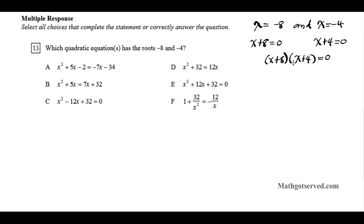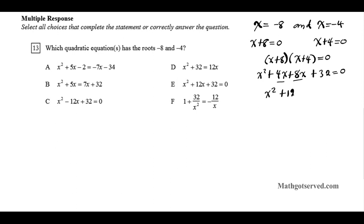We're doing the reverse process of solving a quadratic equation. Now we distribute using FOIL: x squared plus 4x plus 8x plus 32 equals 0. Combining the middle terms, we get x squared plus 12x plus 32 equals 0.